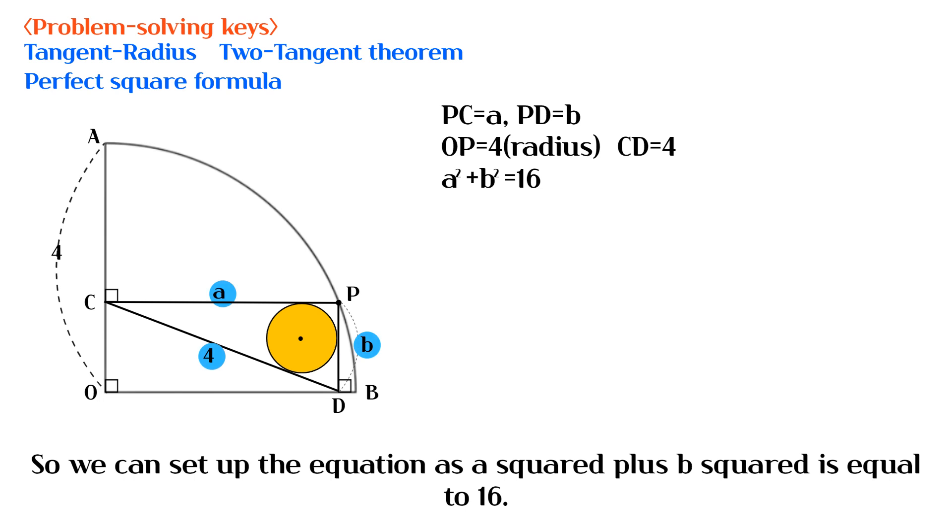So we can set up the equation as A squared plus B squared is equal to 16.